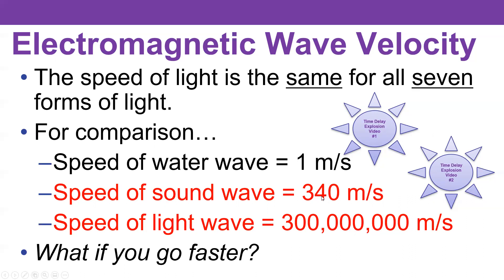Let's look at these two numbers right here. You can see that the speed of sound is about a million times slower than the speed of light, or another way to say that is light is about a million times faster than sound. You know that this is true because when you see a thunderstorm, you see the lightning and then hear the thunder a little bit later — you see the light and then you hear the thunder.